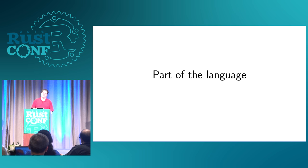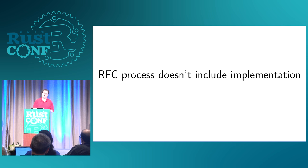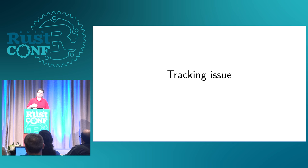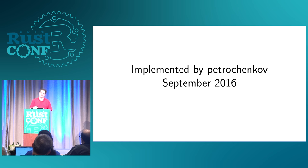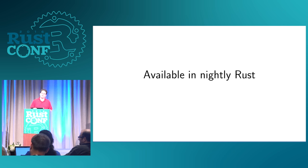Rust now includes unions. But the RFC process does not include implementation — the work on implementation can run in parallel if it wants to be speculative, but in general the implementation doesn't tend to happen as part of the RFC process. When a new RFC is accepted into the language, there's a tracking issue opened on the main rustlang/rust repository to say we've decided to implement this. Petrochenkov implemented this as of last week, so it's actually available in nightly Rust right now — it's behind a feature flag, but it's usable now.